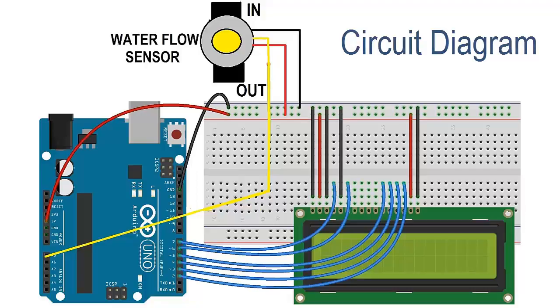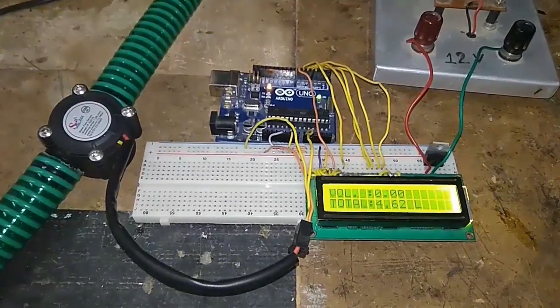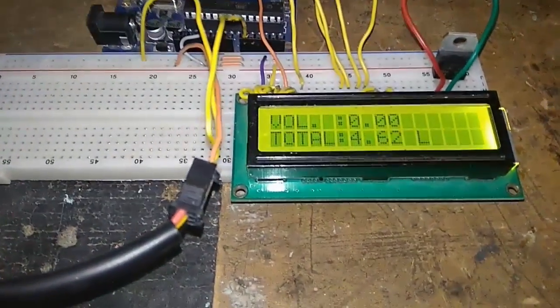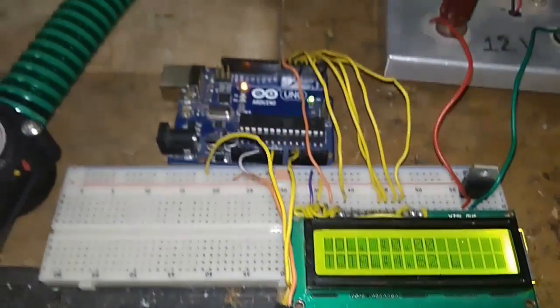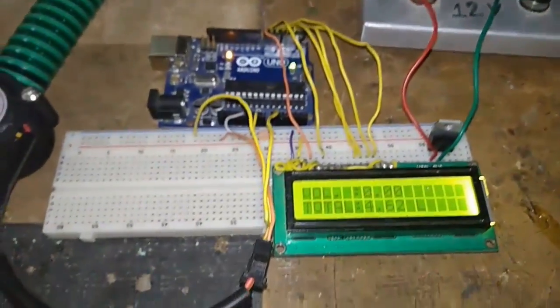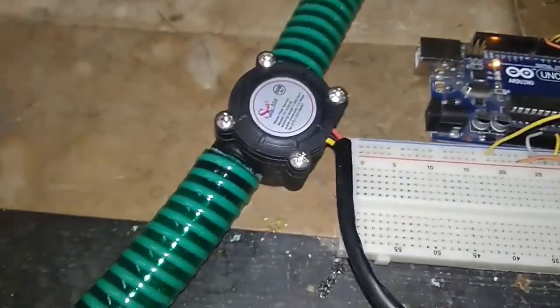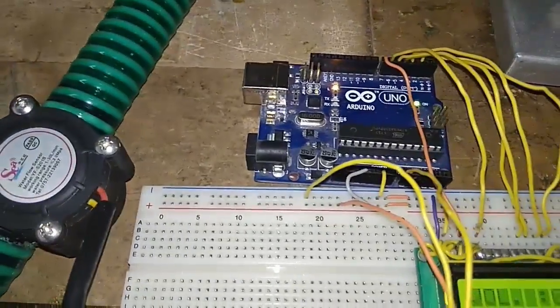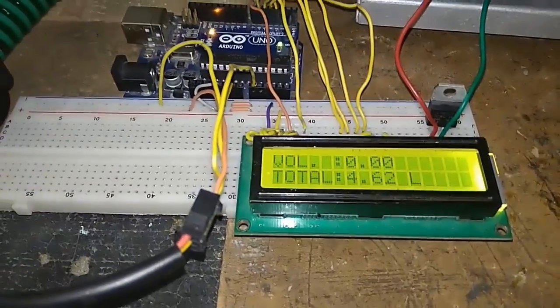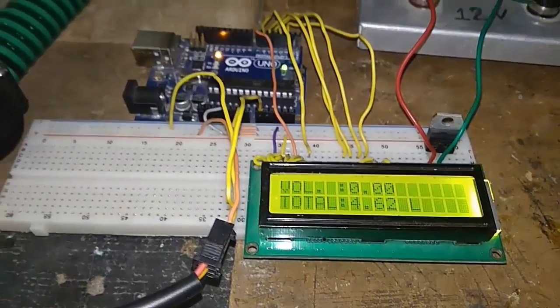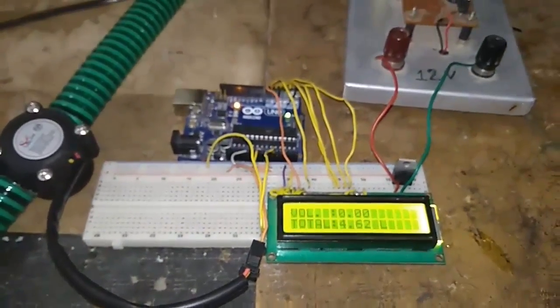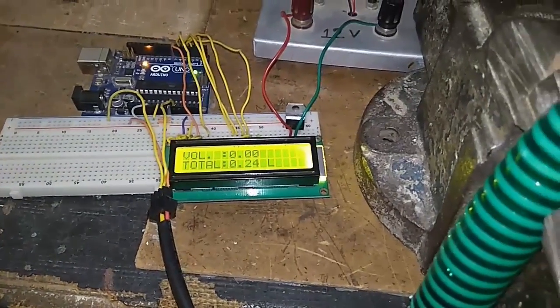This is the demonstration. The demonstration will display volume in liters and total for displaying the total amount of water passed. Actually, volume here refers to flow rate. So let's start.